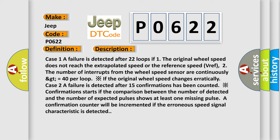Case 2: A failure is detected after 15 confirmations have been counted. Confirmation starts if the comparison between the number of detected and the number of expected pulses shows at least one missing pulse. The confirmation counter will be incremented if the erroneous speed signal characteristic is detected.